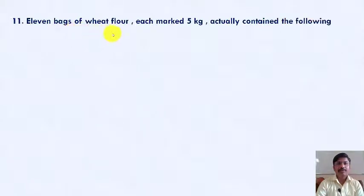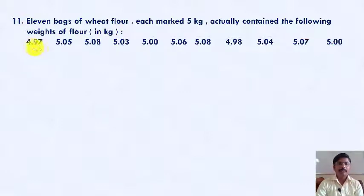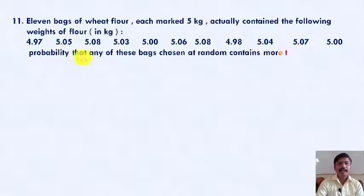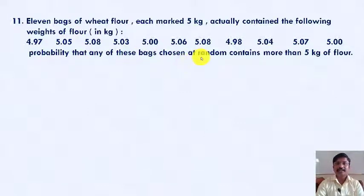Eleven bags of wheat flour, each marked 5 kg, actually contained the following weights of flour in kg: 4.97, 5.05, 5.08, 5.03, 5.00, 5.06, 5.08, 4.98, 5.04, 5.07, and 5.00. Find the probability that any of these bags chosen at random contains more than 5 kg of flour.